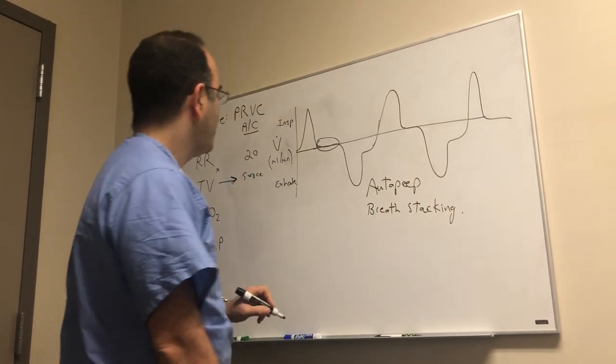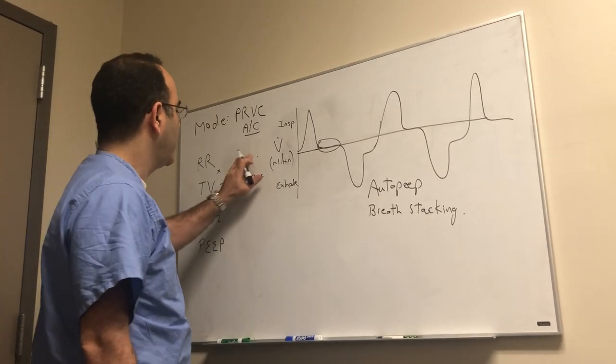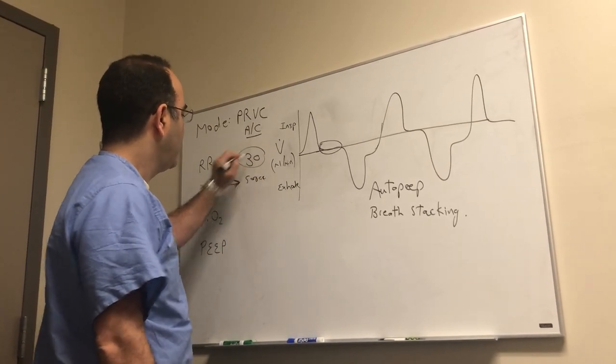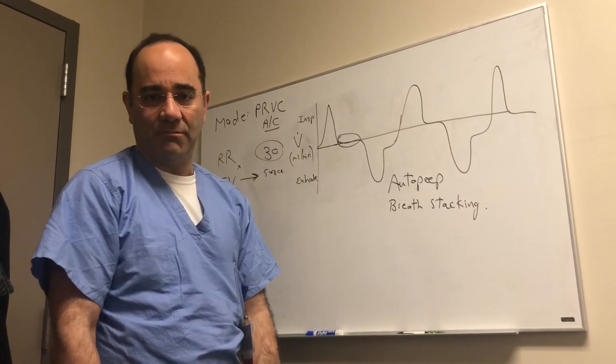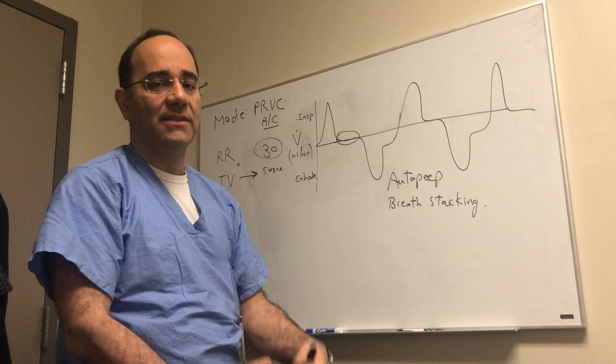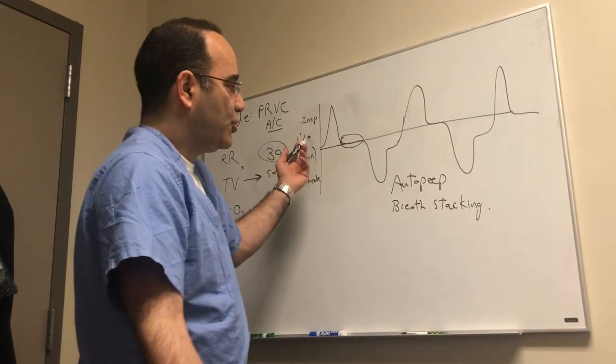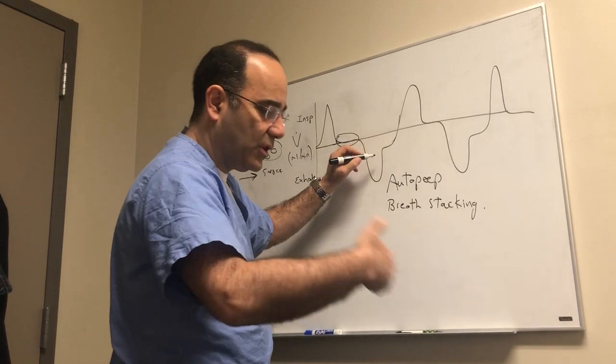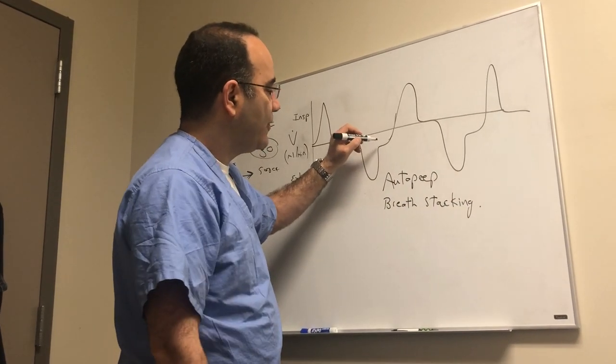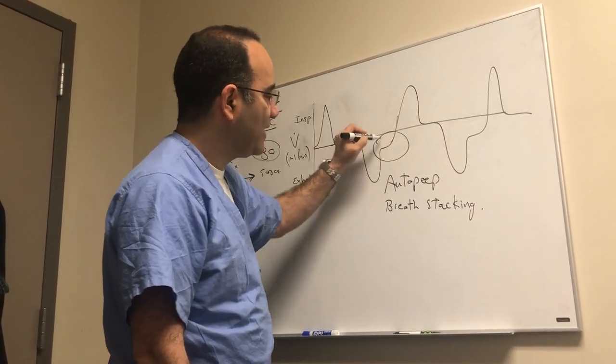The reason this is happening is you've told that machine to breathe so much. You took that respiratory rate up to 30, let's say that's one breath every two seconds. There's not enough time for the person to exhale. Remember that exhalation is a passive process, takes time. The machine will do whatever you tell it to do, which is give the air, but then give air again with insufficient time to exhale.